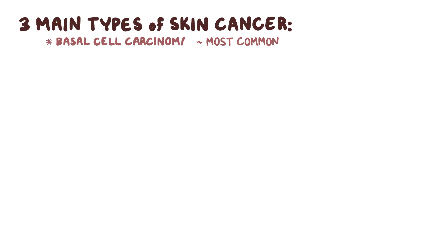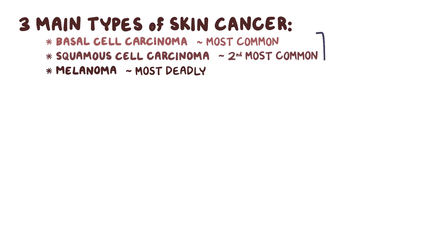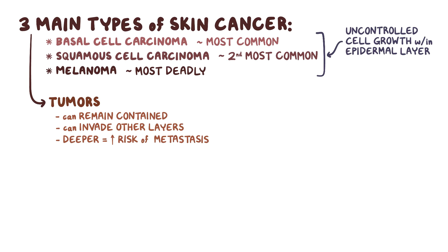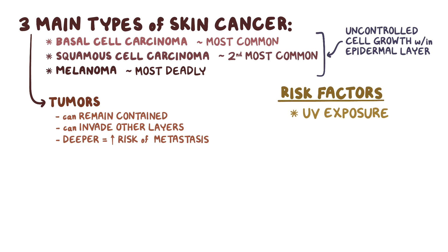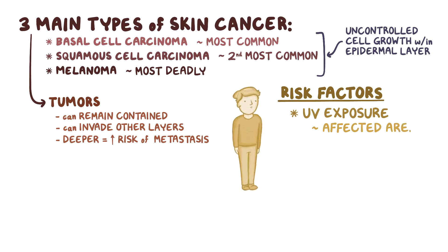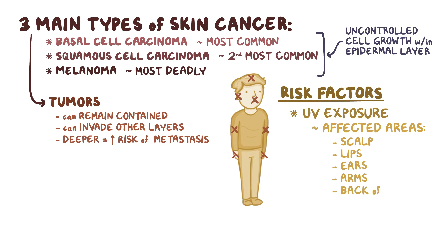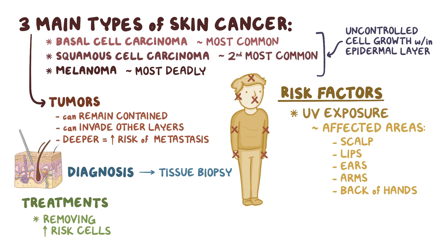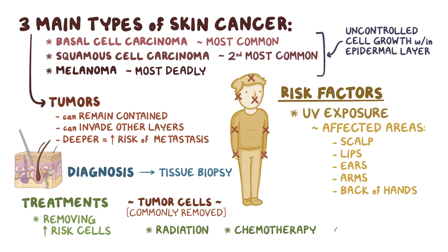To recap, there are three main types of skin cancer: the most common, basal cell carcinoma; the second most common, squamous cell carcinoma; and the most deadly, melanoma. They all form from uncontrolled growth of cells within the epidermal layer of the skin. Tumors can remain relatively contained or invade other layers of the skin — the deeper the tumor invades, the greater the risk of metastasis. UV exposure is a risk factor, so areas exposed to the sun are particularly affected, like the scalp, lips, ears, arms, and backs of the hands. Diagnosis is made with a tissue biopsy, and treatments can include physically removing cells, as well as radiation, chemotherapy, or immunotherapy.